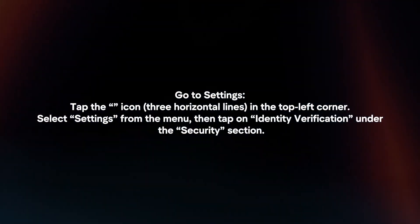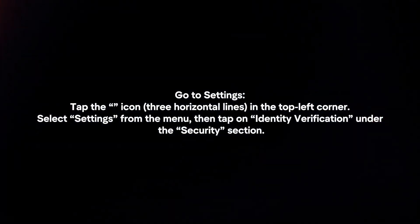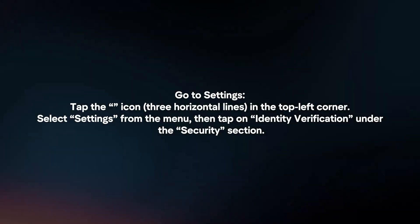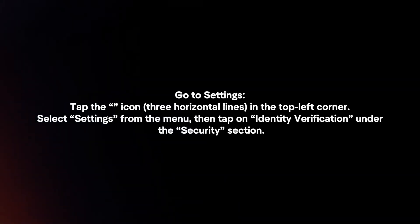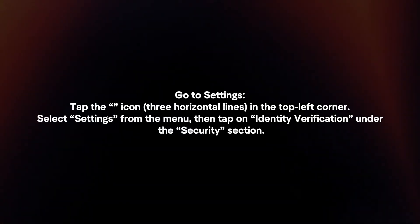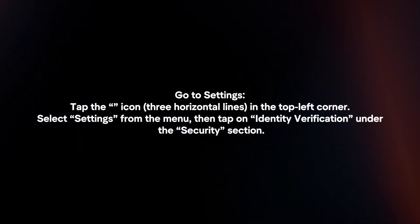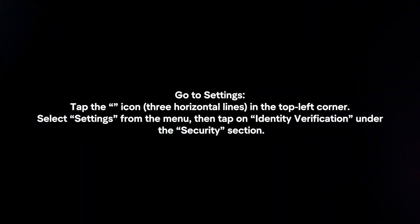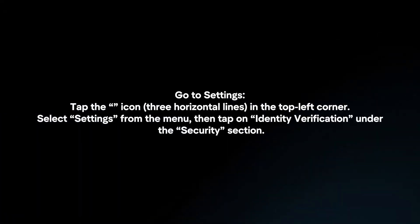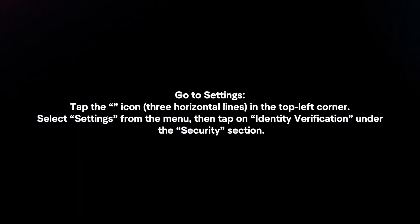Go to settings. Tap the three lines icon in the top left corner, select settings from the menu, then tap on identity verification under the security section.